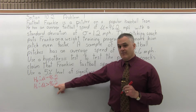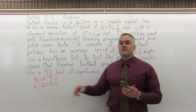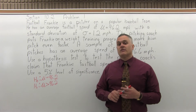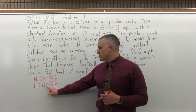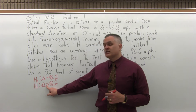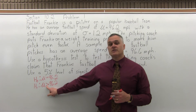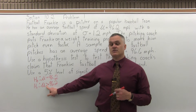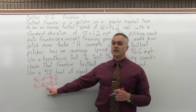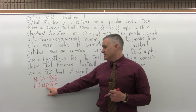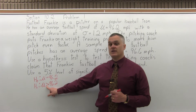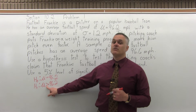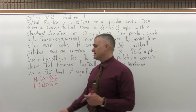The third step is determine if it's a left-tail, right-tail, or two-tail test. To determine what type of test, look at the inequality symbol in your alternate hypothesis and see which direction it's pointing. In this case, we have a greater than symbol in our alternate hypothesis — it points to the right, so this is a right-tail test.